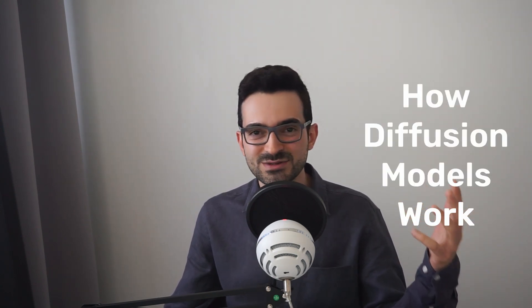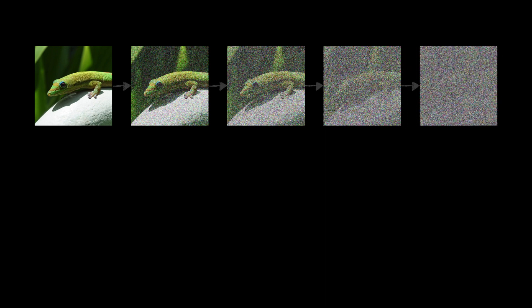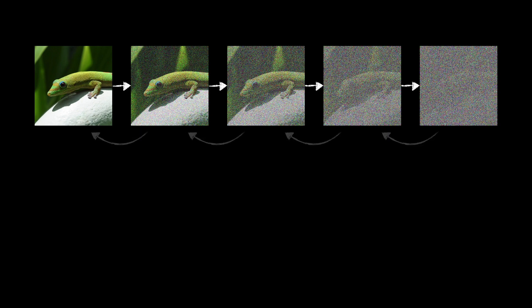So how do diffusion models work? The gist of it is that during training, we take an image and gradually add noise until there's nothing but noise. And when we want to generate images, we reverse this process, start with noise, and gradually remove noise until we have a clean image. In the forward diffusion process, the entropy of the images increases, as adding noise makes them more and more homogeneous. And this is somewhat similar to diffusion in thermodynamics, which is what they're inspired by and named after.